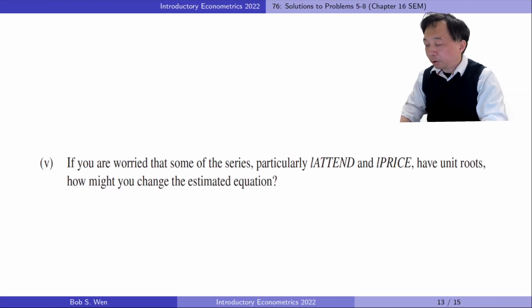In part five, if you are worried that some of the series, particularly the log of attendance and the log of price, have unit roots, how might you change the estimated equation?